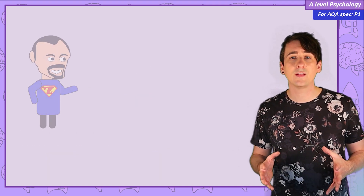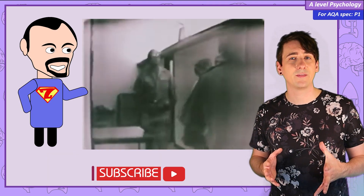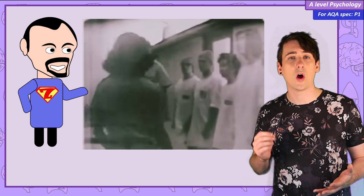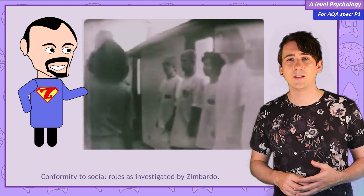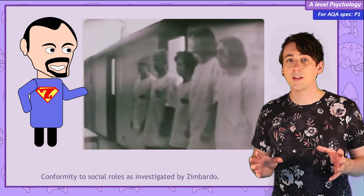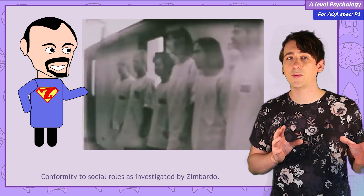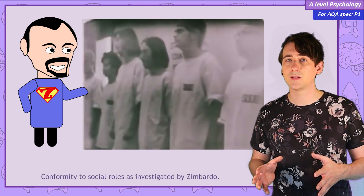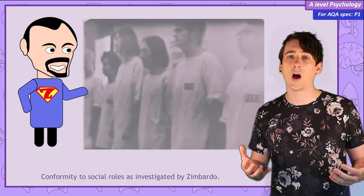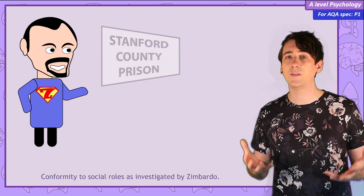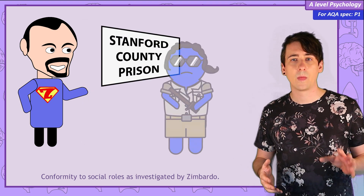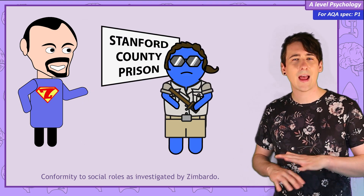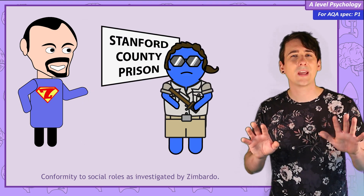Investigating the causes of prison violence in the basement of Stanford University, he took on the role of prison attendant, randomly assigning half a group of college-aged males to be prison inmates, while the other half became prison officers. The result? Absolute chaos.